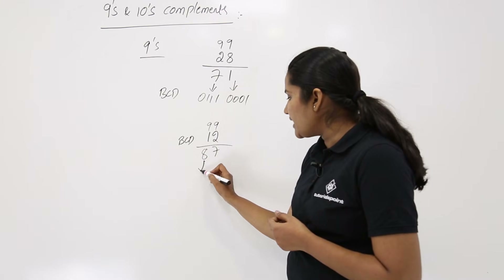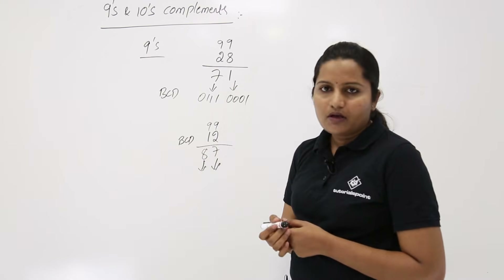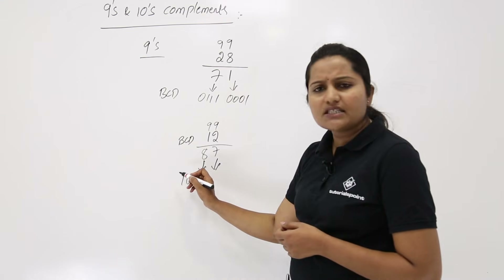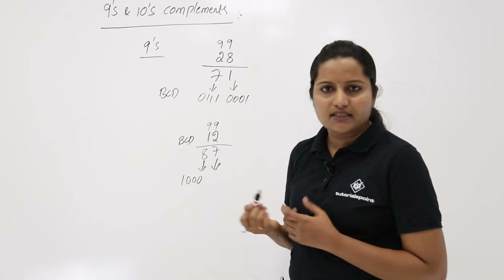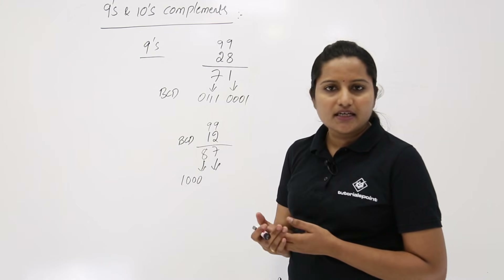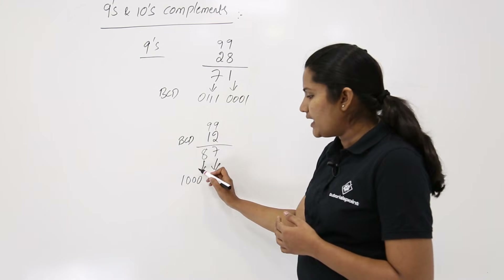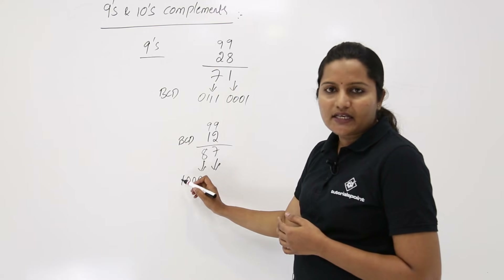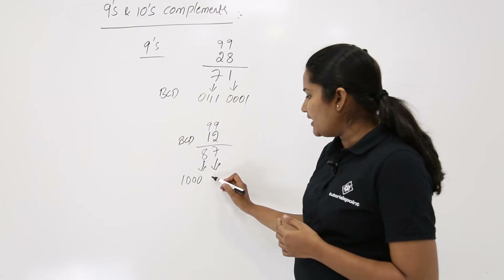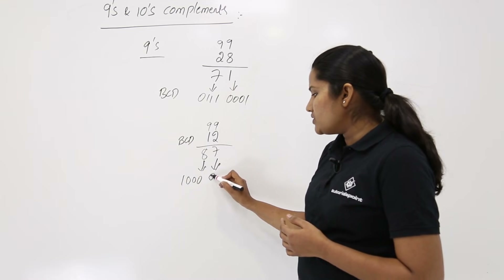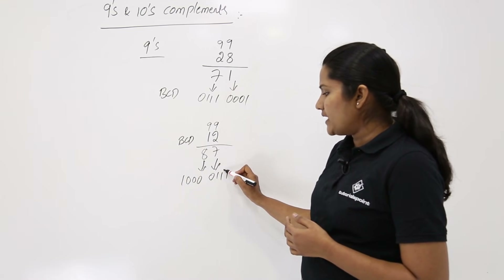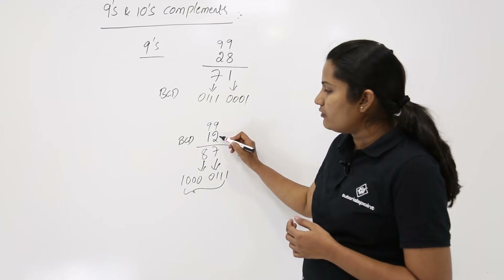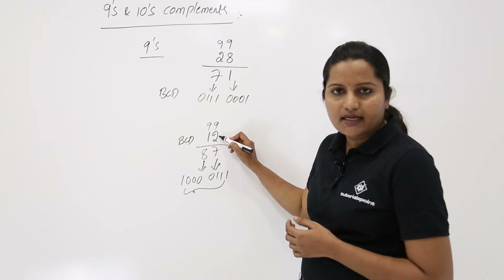You then need to express this in BCD code. For 8, the BCD is 1000 — take 8421 as reference. Only a 1 at the 8-position gives 8. For 7, it is 0111, which is 4 plus 2 plus 1 equals 7. So 1000 0111 is the 9s complement of BCD 12.